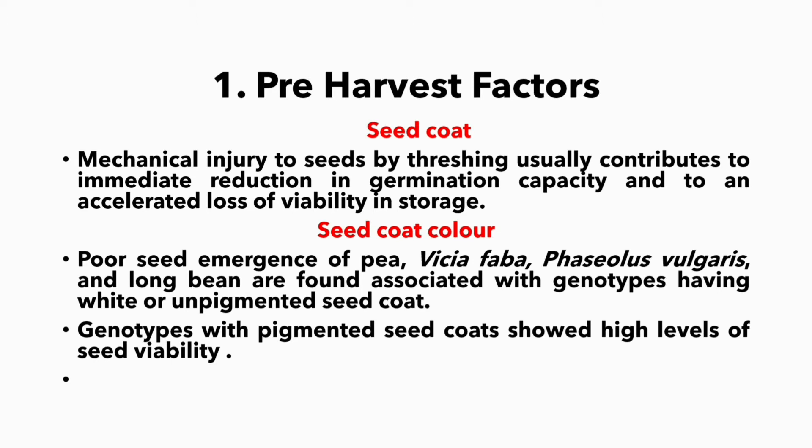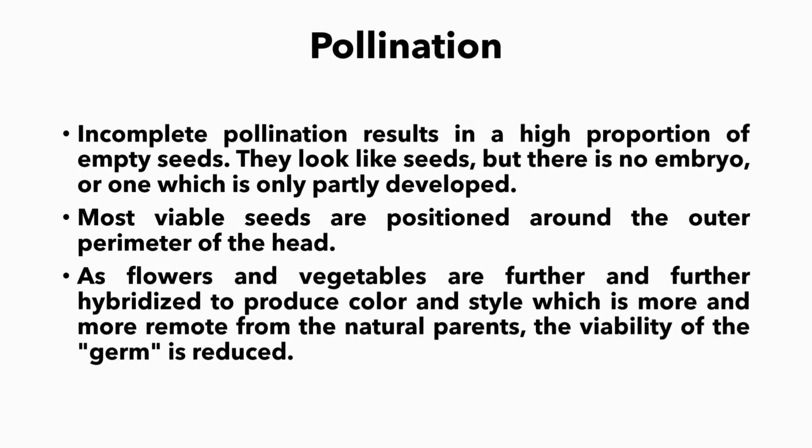Genotypes with pigmented seed coats showed a high level of seed viability. Pollination: incomplete pollination results in a high proportion of empty seeds. They look like seeds but there is no embryo, or one which is only partially developed. Most viable seeds are positioned around the outer perimeter of the head.